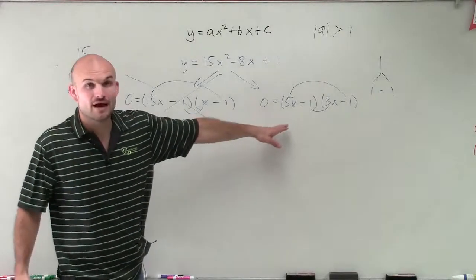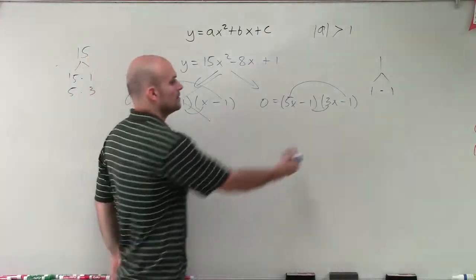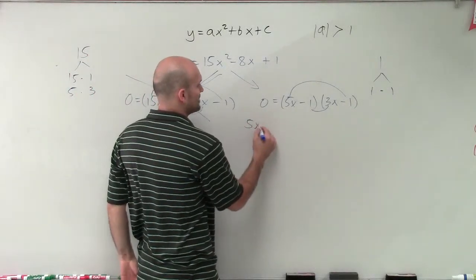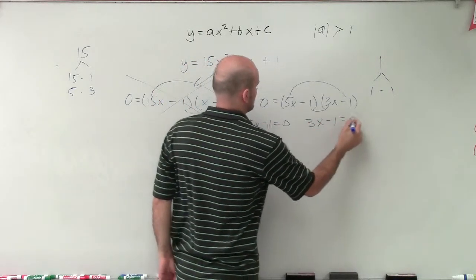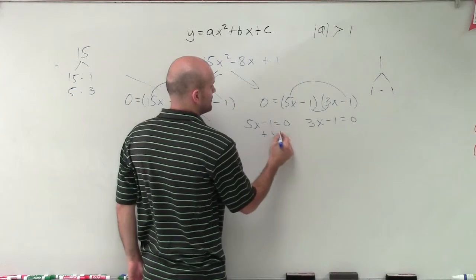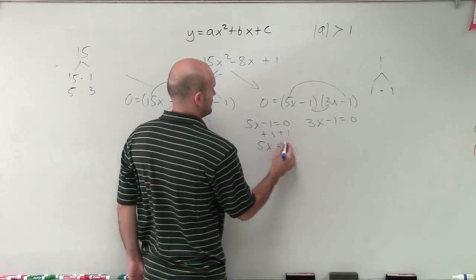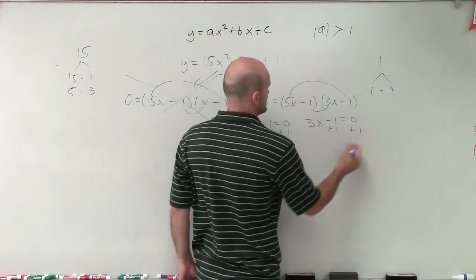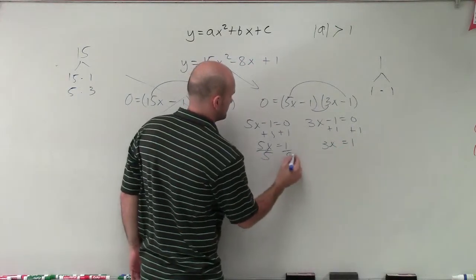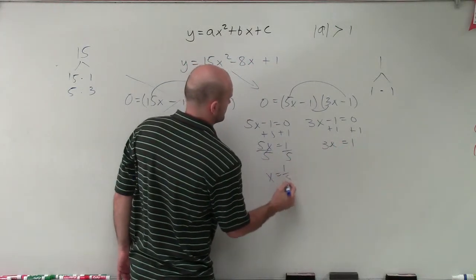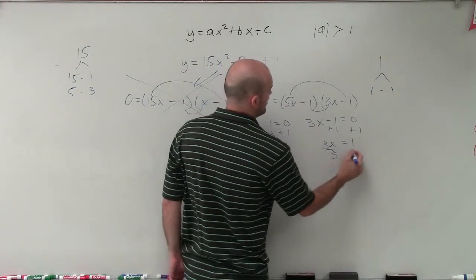But now I have it in factored form, set equal to 0. Now I can apply the 0 product property to set both of these equal to 0. So therefore, I add 1 to both sides. And then I divide by 5, divide by 3.